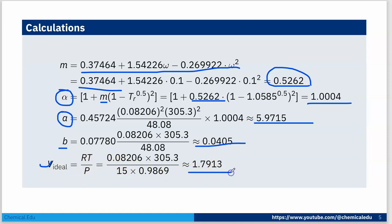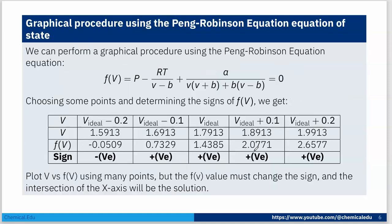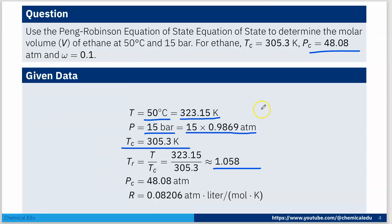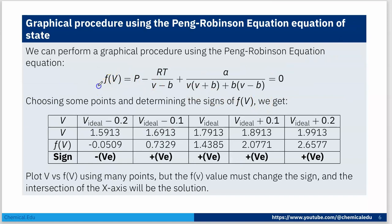Now we need to calculate V from the non-linear equation. Writing it in functional form: f(V) = P - RT/(V-B) + A/[V(V+B) + B(V-B)] = 0. We can use a numerical technique or graphical method. Using the graphical method, we can easily find the root of this equation, which will be V.